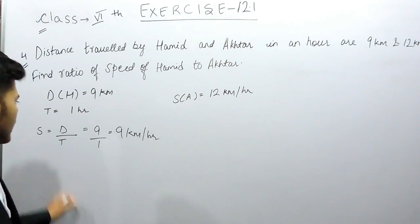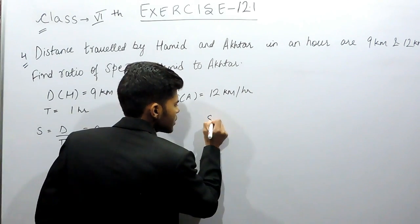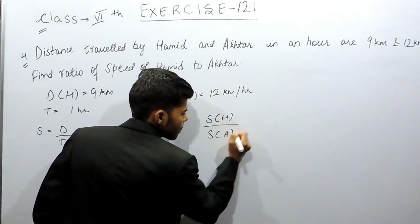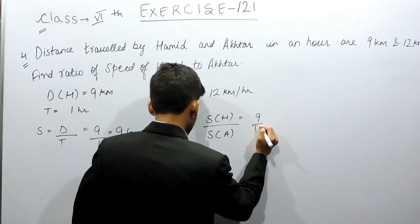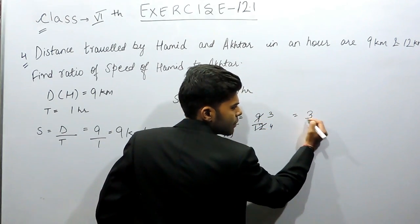Now we have to find the ratio of speed of Hamid to speed of Akhtar. That means 9 upon 12. 3 times 3 is 9, and 3 times 4 is 12, so this will be 3 by